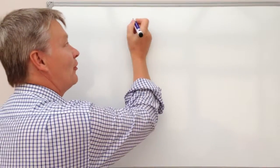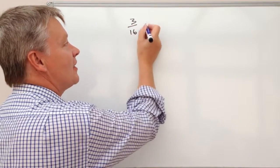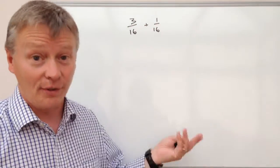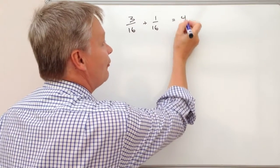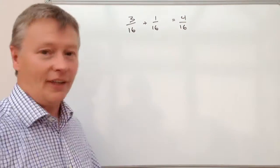It's fairly straightforward. If you get something like 3/16 plus 1/16, you just simply add the two fractions together. So 3 plus 1 is 4/16.